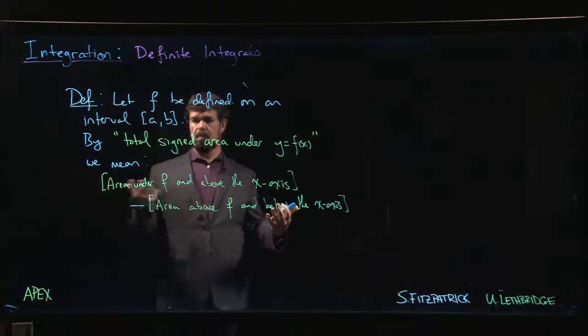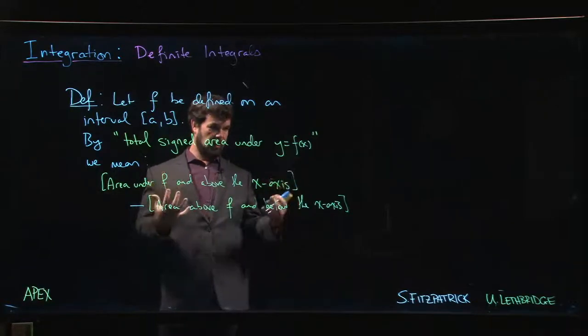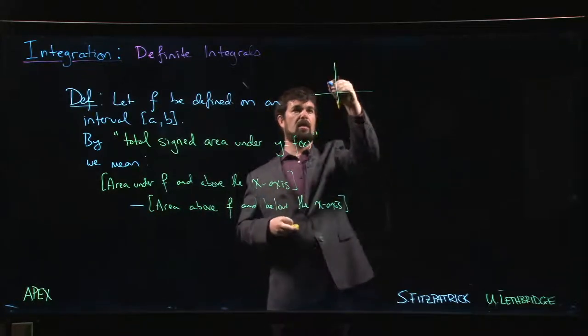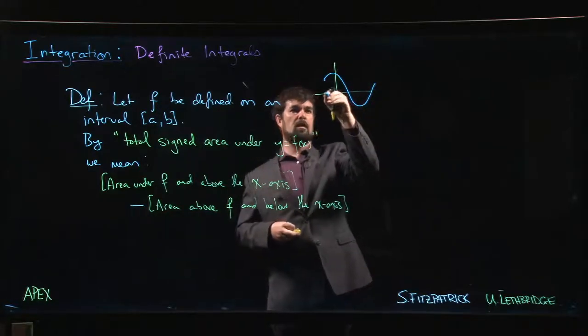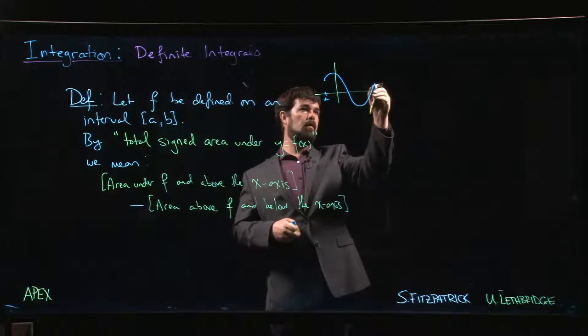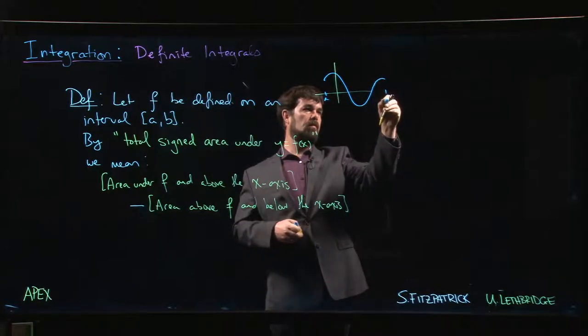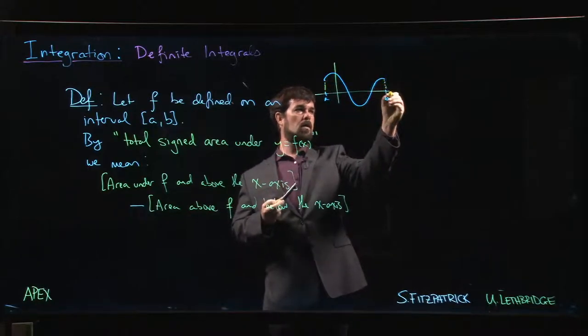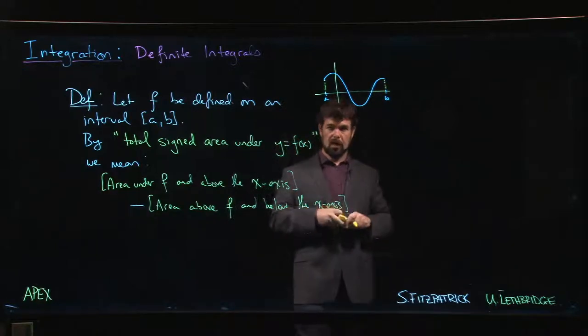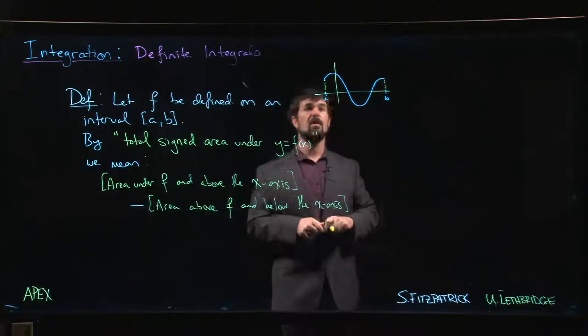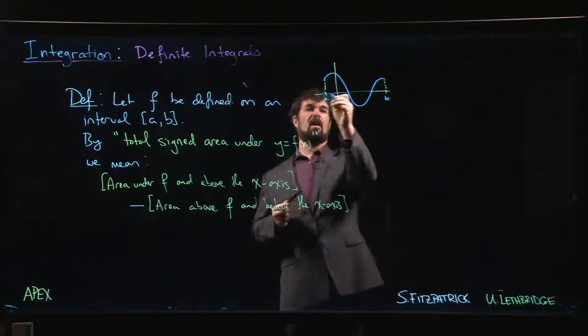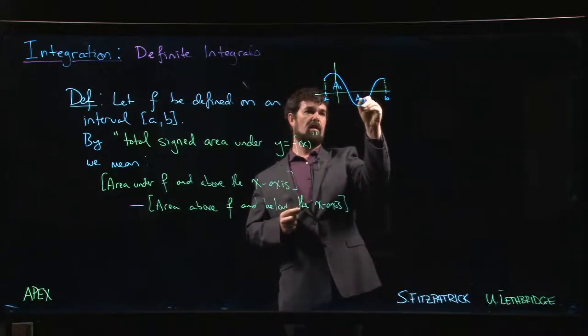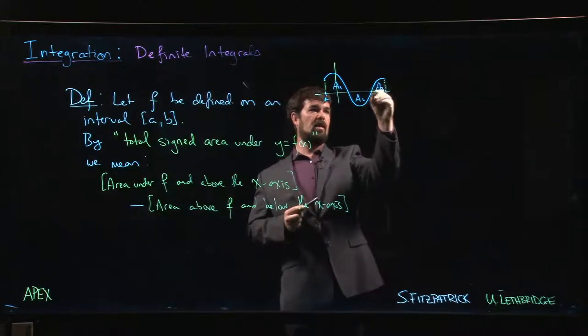So we have this idea of total signed area. We might have a graph that looks something like this - here's a and maybe here's b - and there are sort of three distinct areas that are enclosed between the x-axis and the graph. There's this area here that lies above the x-axis, there's this area here that lies below, and then again this area which lies above.